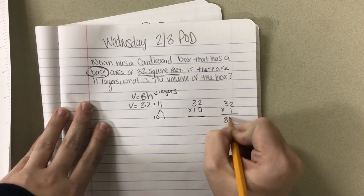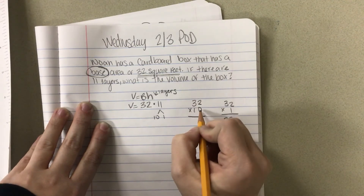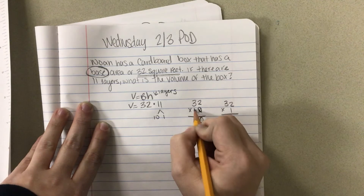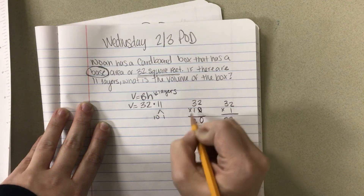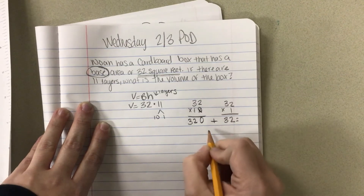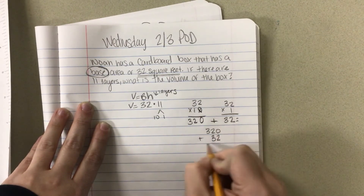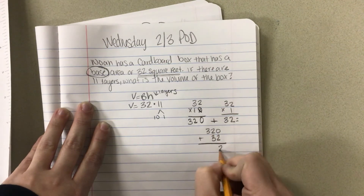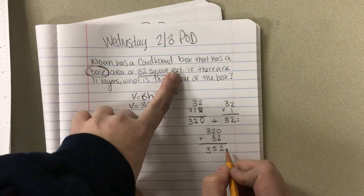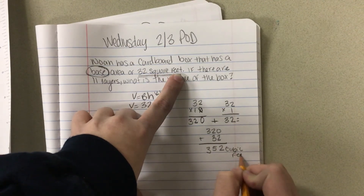32 times 1 is 32. For 32 times 10, I'm multiplying by 10, so I'm moving one place value — bring my 0 down, then 1 times 2 is 2, and 1 times 3 is 3. So I have 320 plus 32. Make sure we're aligning up our place values. My answer is going to be 352, and since I'm working in feet, that would be cubic feet.